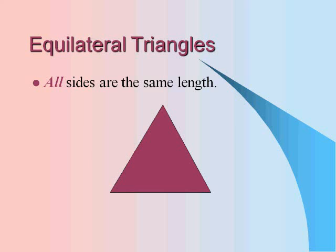Equilateral triangles have all sides that are the same length. So for this triangle, you would say that side A equals side B equals side C.